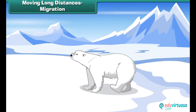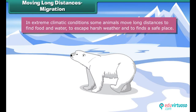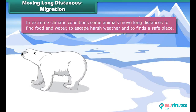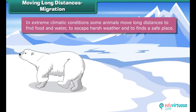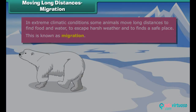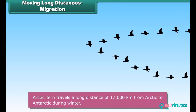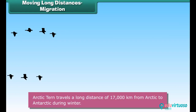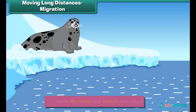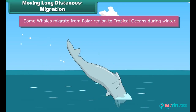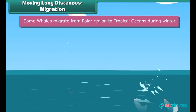Moving long distances — migration: In extreme climatic conditions, some animals move long distances to find food and water, to escape harsh weather, and to find a safe place. This is known as migration. The arctic tern travels a long distance of seventeen thousand kilometers from the Arctic to the Antarctic during winter. Some mammals and insects also migrate. Some whales migrate from polar regions to tropical oceans during winter.